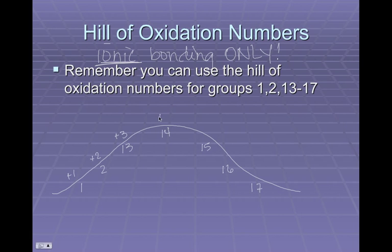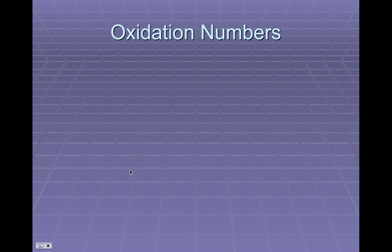Group 14 is at the top of the hill. It's usually a +4, occasionally it can be a -4, and you do have a couple of exceptions that can be a +2, but we'll talk about those later. So group 14 — they're kind of weird. Going back down the hill, instead of positive we're going to be negative, but the number values stay the same. So group 15 is -3, group 16 is -2, and group 17 is -1. These elements form these charges because of their electron configuration and what they need to do — either gaining or losing electrons — to look like a noble gas. Only use that with ionic compounds.